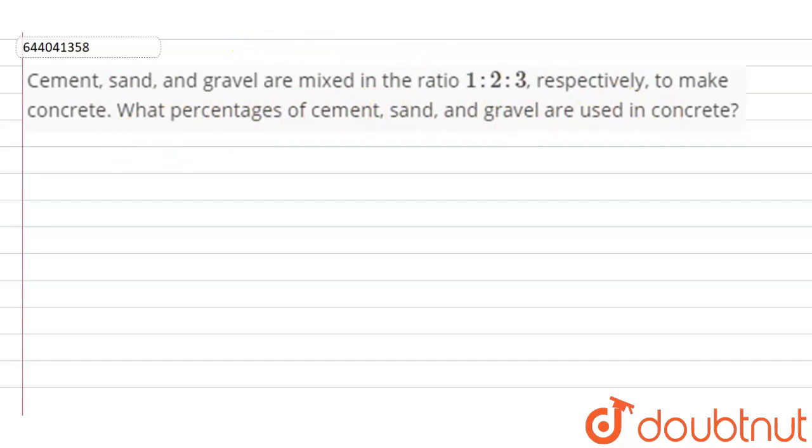First of all, the ratio is 1 to 2 to 3 of cement, sand and gravel. We have to find the percentages of cement, sand and gravel in concrete. First, total parts is equal to 1 plus 2 plus 3, which equals 6 of concrete. Now,